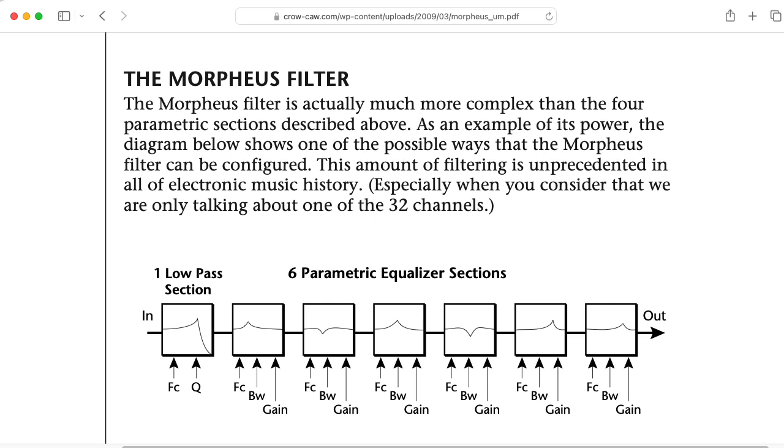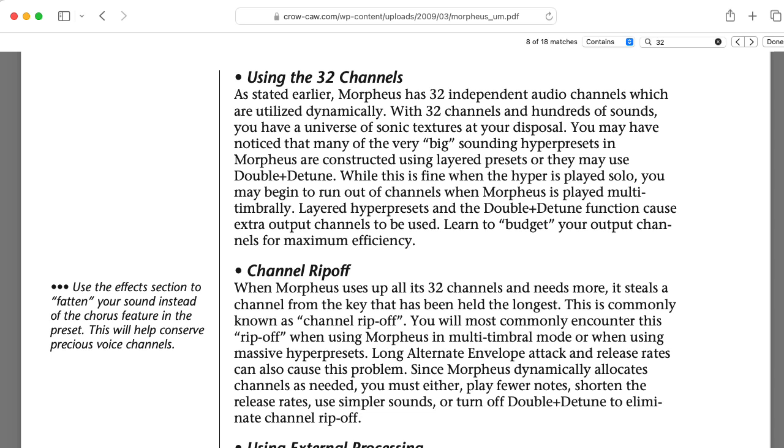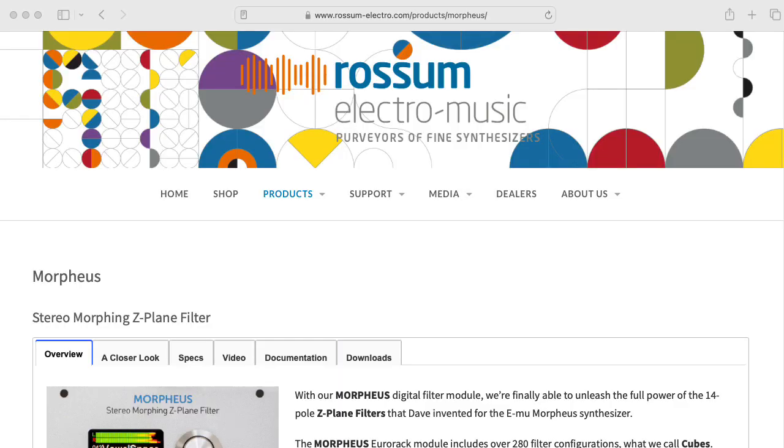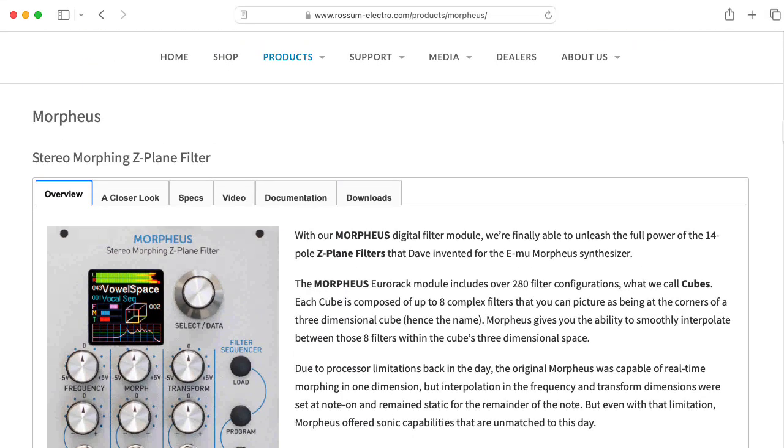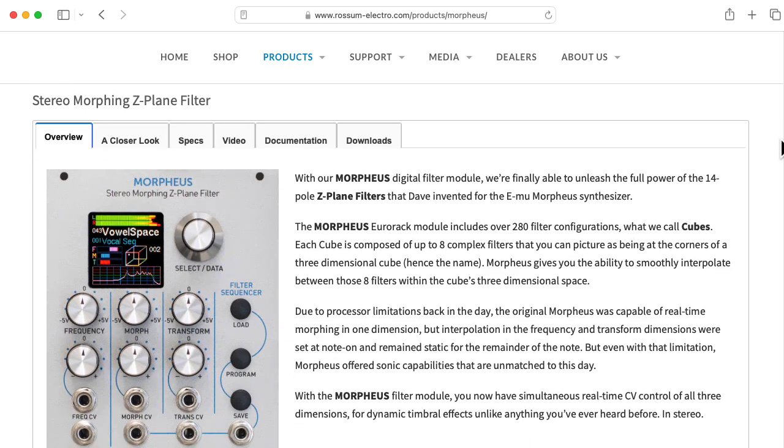Oh, one final note. The Emu Morpheus I mentioned at the beginning has seven two-pole resonant filters for each voice. So that's a total of 14 poles. And the Morpheus has 32 voices. That's a whole lot of DSP for 1993. The original Emu Morpheus is long out of production, but Rossum Electro Music now provides that kind of experience in the form of a Eurorack module.